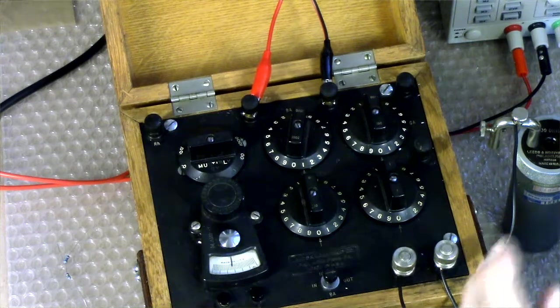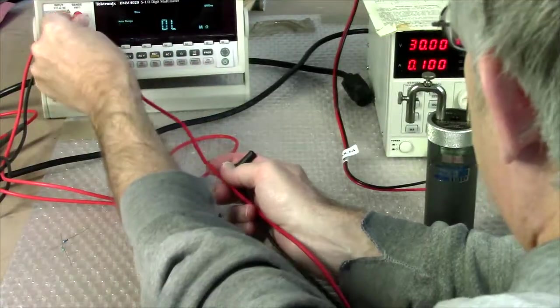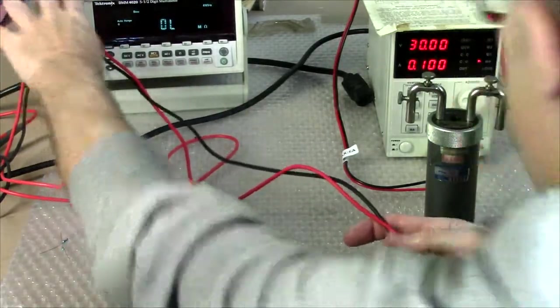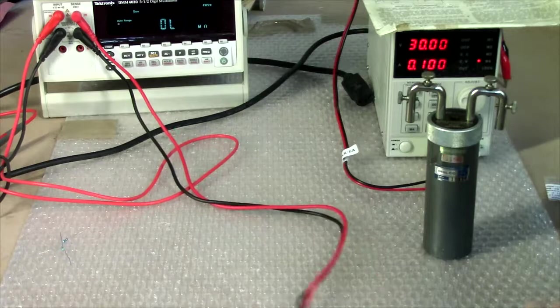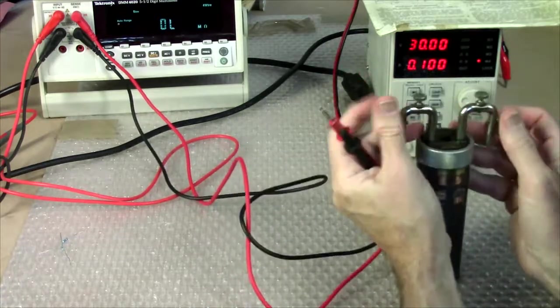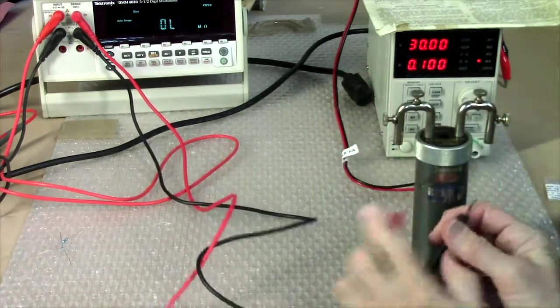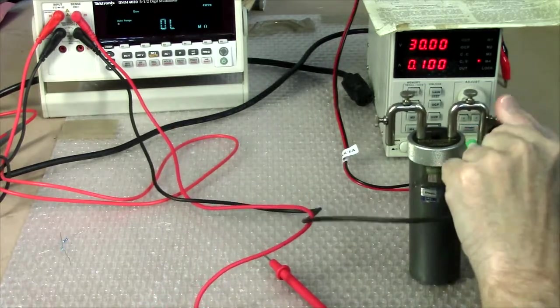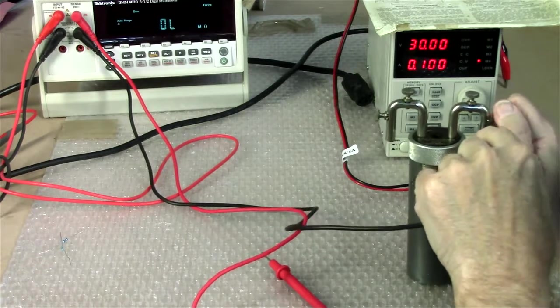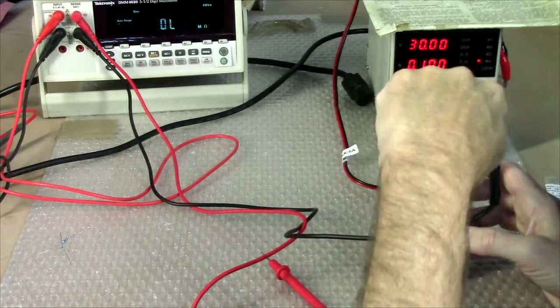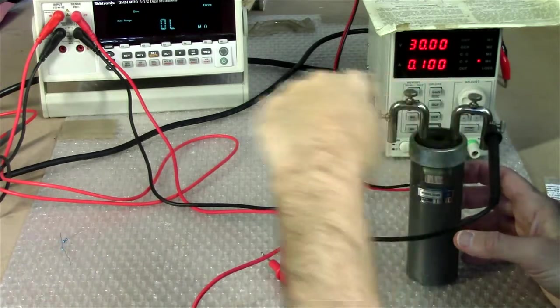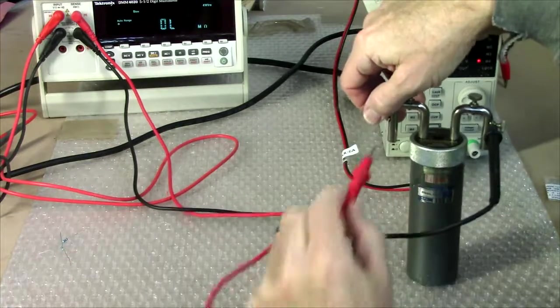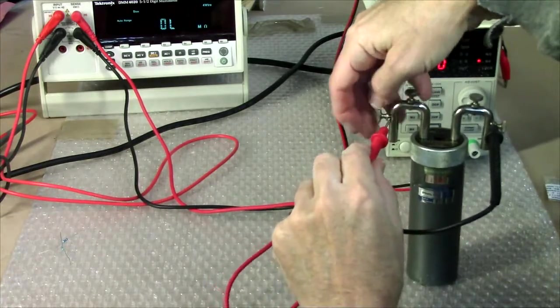Let's see, so on two of these, one set of probes puts out a fixed known current value. And that current flows through the unknown resistance and the leads, the test leads plus the leads here, but the current must flow through the leads and the resistor.